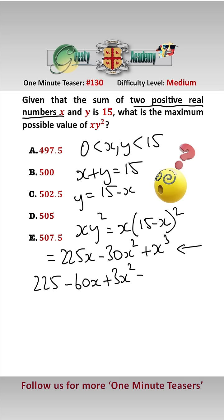We can divide by 3 there, which gives us x squared minus 20x plus 75 equals 0.